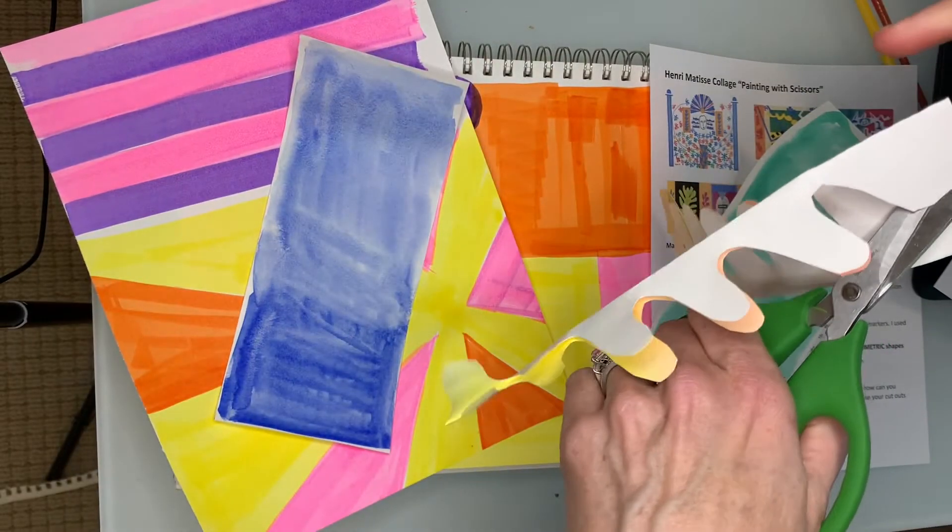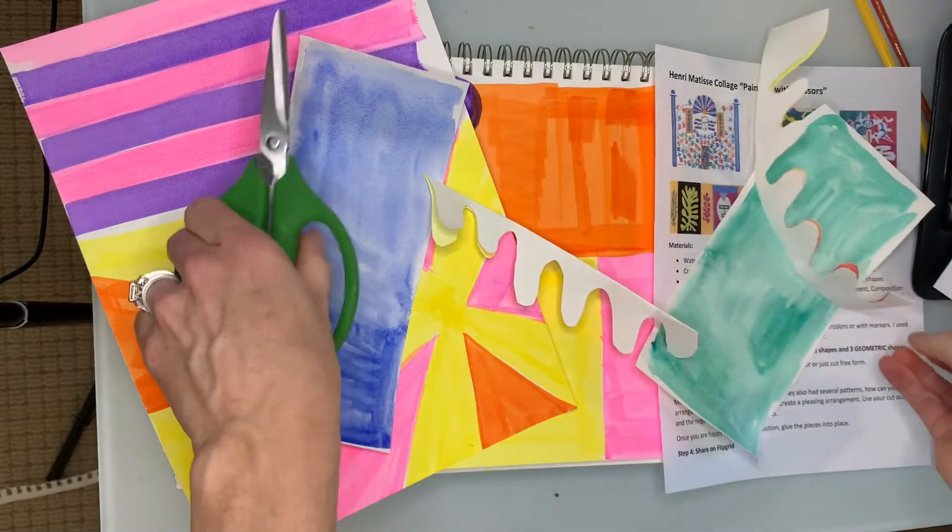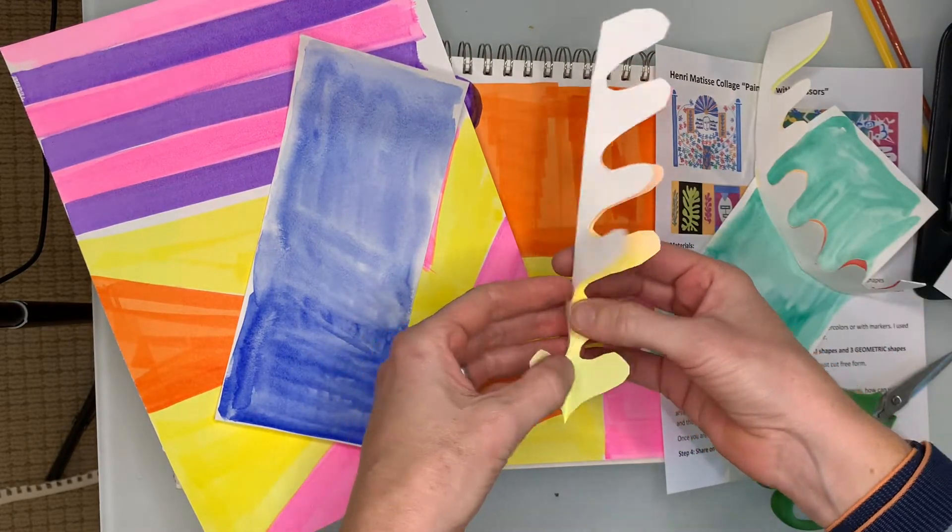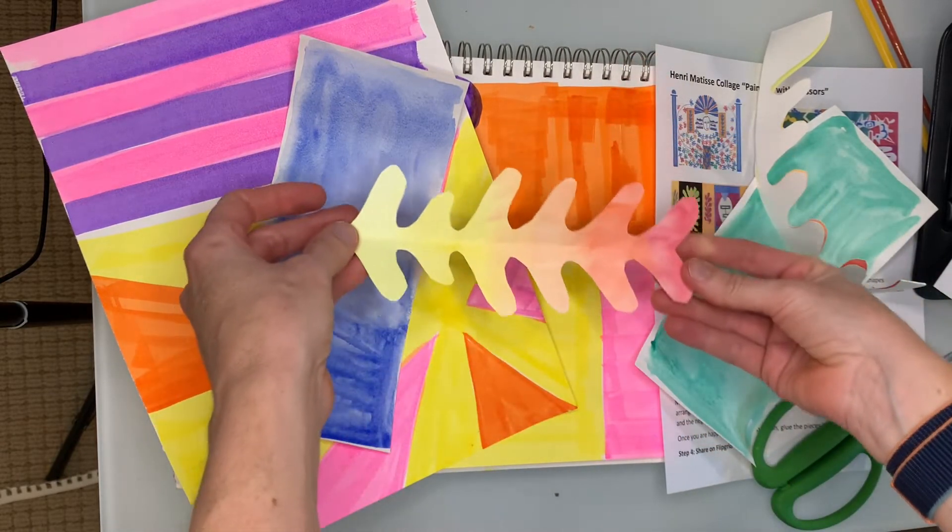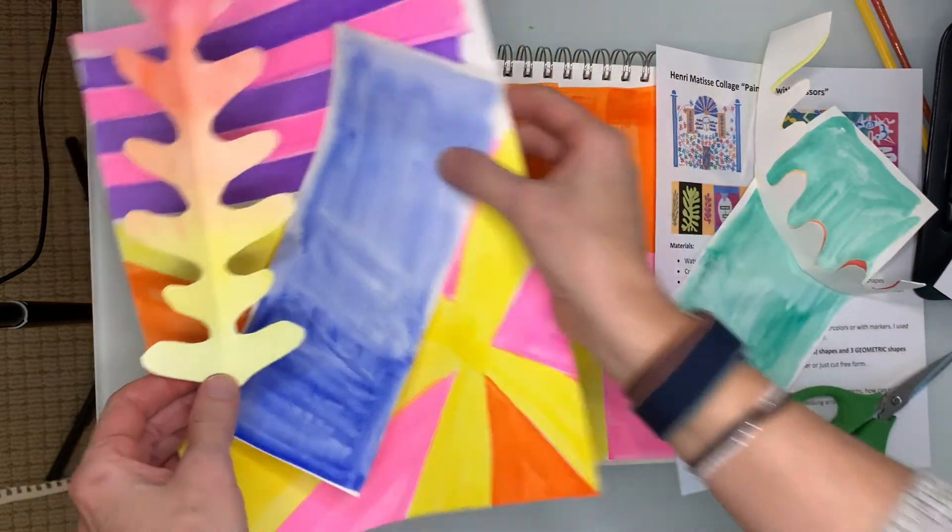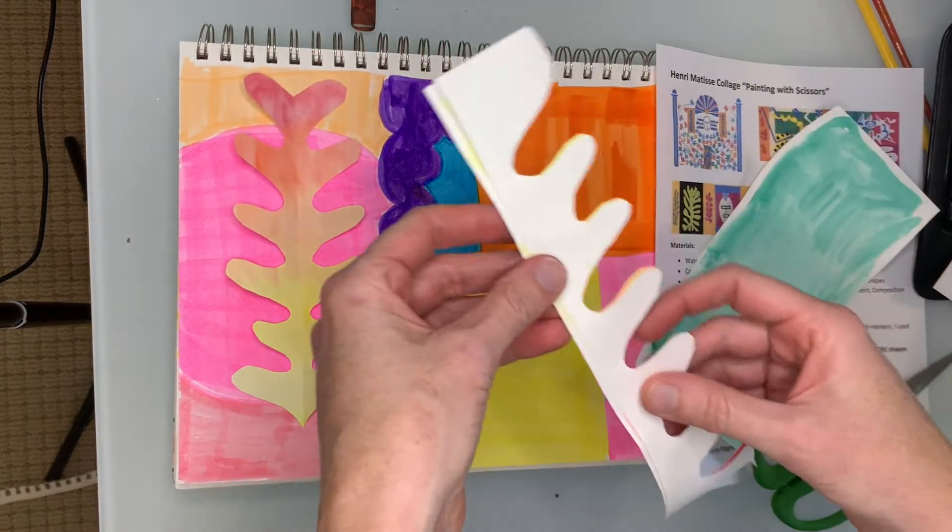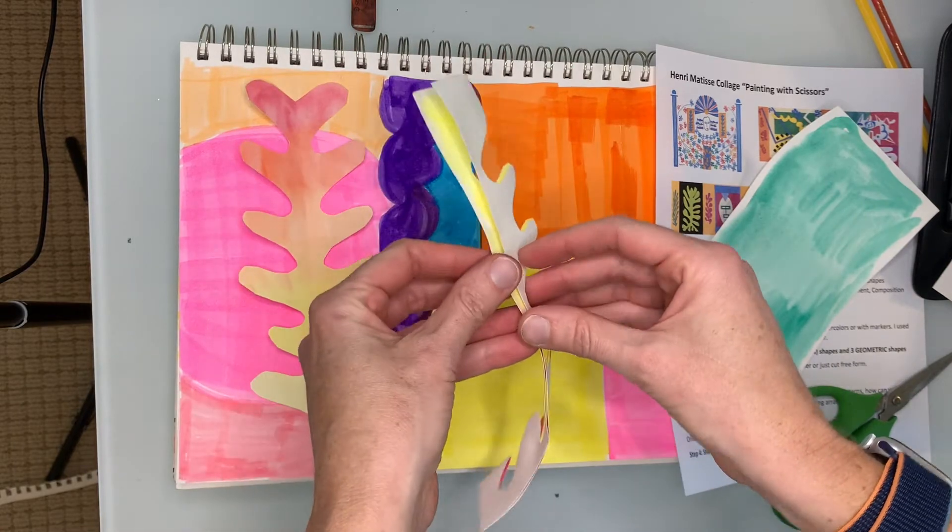Oops. All right, moment of truth. I'm going to open it up. Oh, that is awesome looking. I'm really excited about it. I actually like it on the blue, but I have that here. And then this is my first shape, right? But then remember how I cut it out?